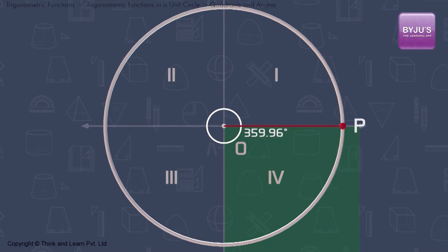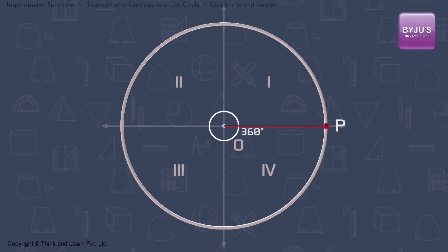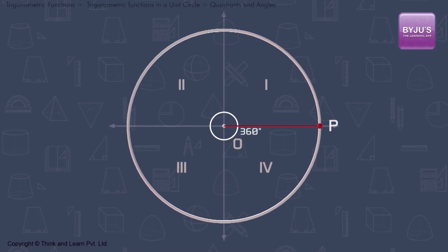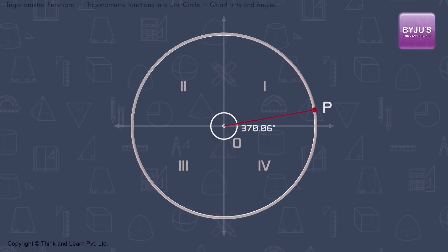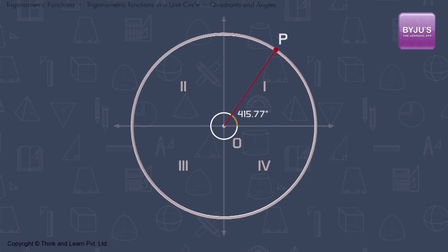At a full rotation, the angle will be 360 degrees. After completing the full rotation, the angle will not start from 0 but will keep on increasing, and this way the angle becomes larger and larger.